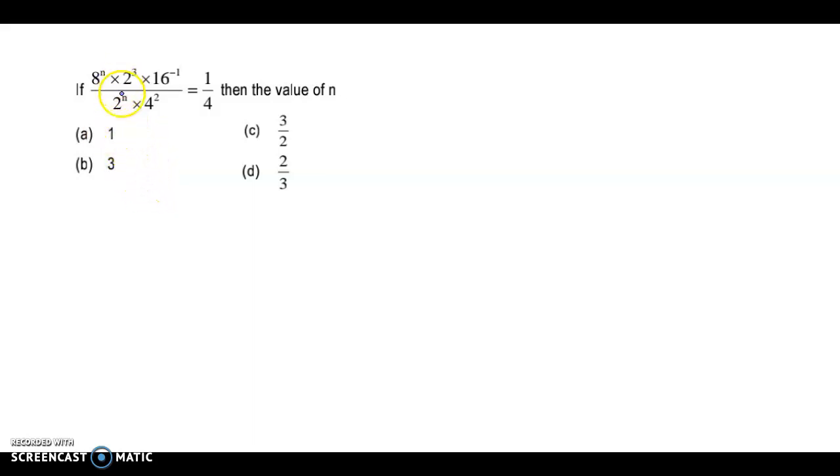Hello and welcome back. I have discussed cutting examples from indices. If 8 raised to n times 2 cube times 16 raised to minus 1 divided by 2 raised to n times 4 square equals 1 by 4, then the value of n is. So we have 8 raised to n times 2 cube times 16 raised to minus 1 divided by 2 raised to n times 4 square equals 1 by 4.